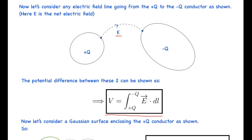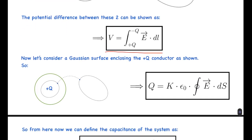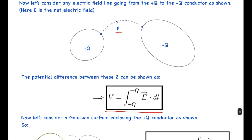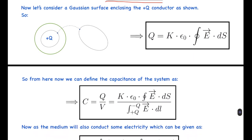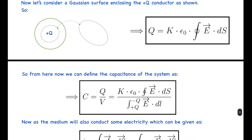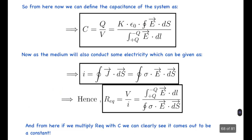I haven't been careful about signs here but it works out. I am doing this only to find the capacitance and then find the equivalent resistance and relate them. Now let's consider a Gaussian surface enclosing the +q conductor as shown — the green circle here is the Gaussian surface. The electric flux, E·dS, equals q/ε₀, but since we are in a medium of relative permittivity k, it becomes q/(kε₀). So charge q equals kε₀ times the surface integral of E·dS.